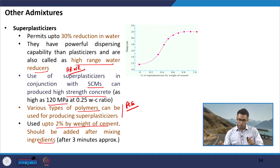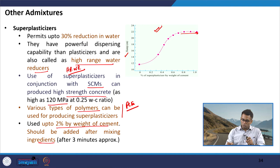Looking at some variations with superplasticizer use: you can see how the slump increases but then stabilizes after some time. This chart can also be used to select the percentage of superplasticizer based on the targeted slump.